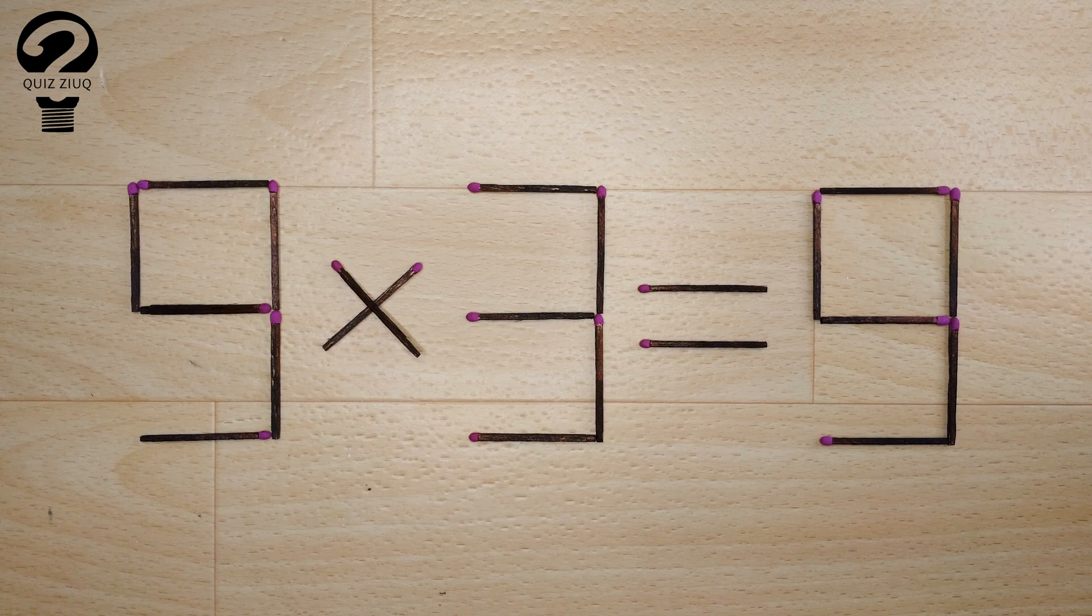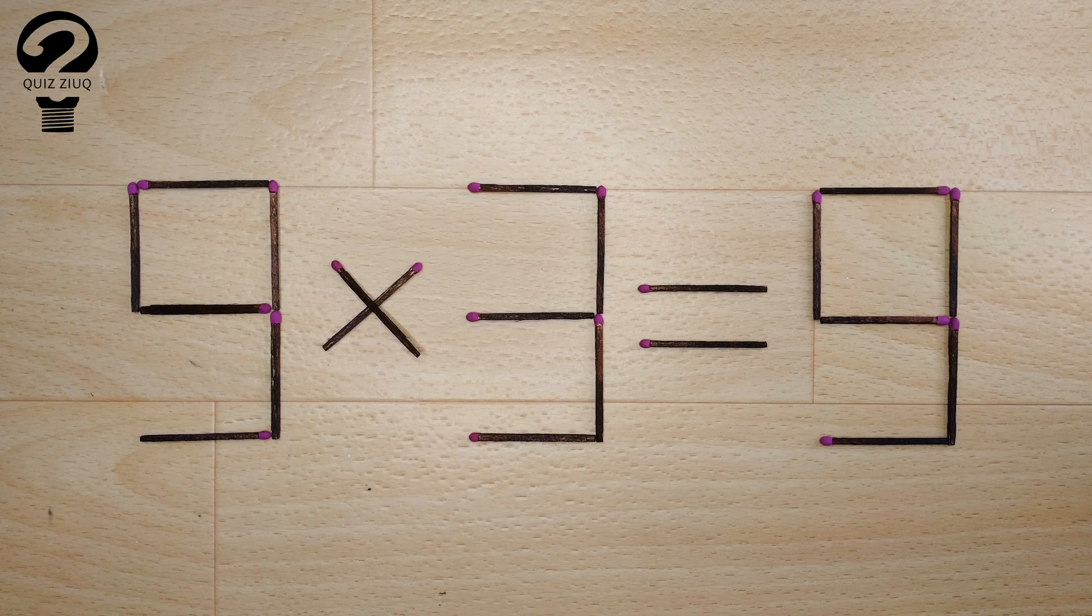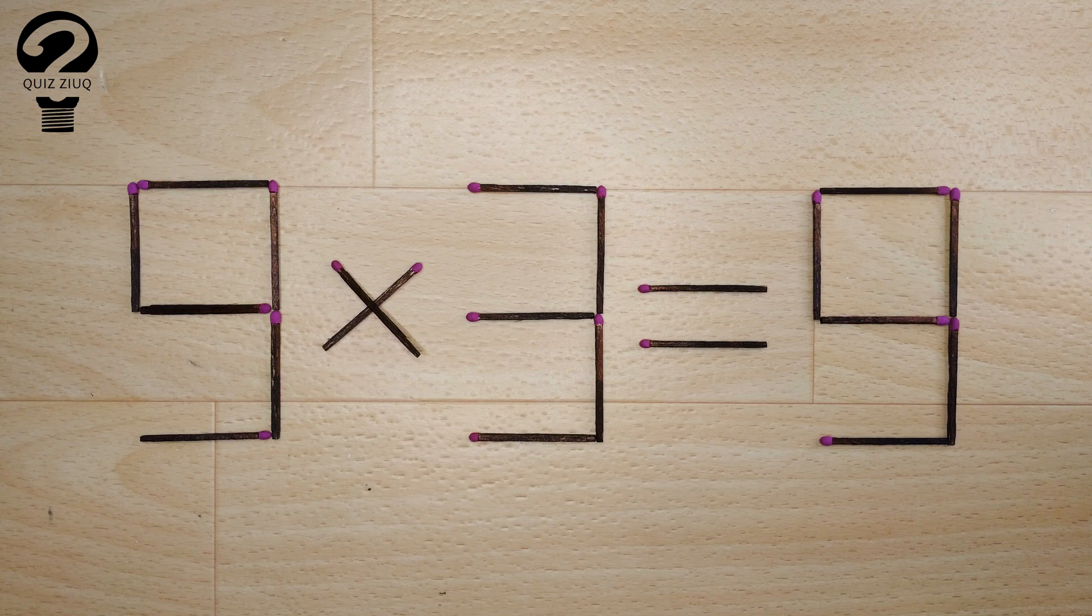Here's the next puzzle. We have this equation, 9 times 3 equals 9. Our equation is incorrect, and we need to move two matches to make our equation correct.